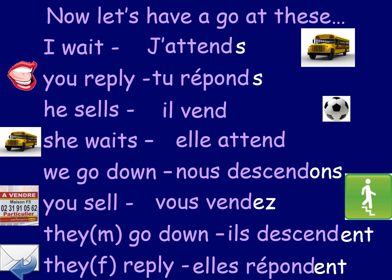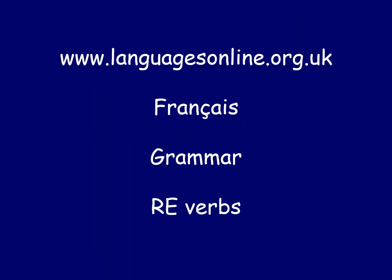So those are the RE verb conjugations. Remember the pattern: knock the RE off the end and put on the correct ending depending on who you're talking about — S, S, nothing, ONS, EZ, ENT. For more practice, go to the Language Online website — no password needed. Go to French, then Grammar, and there's a whole section on RE verbs to help you master this. Merci, au revoir!